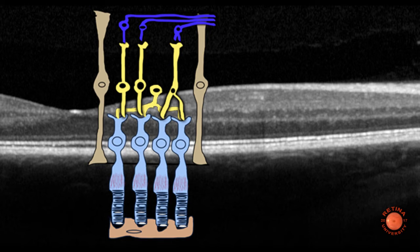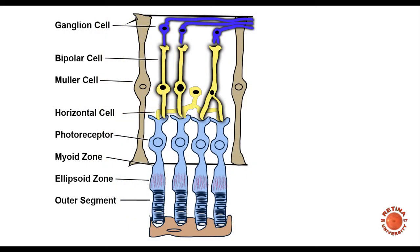And so this schematic diagram of the retina layers corresponds roughly to what you'll see in a high definition line scan through the macula.